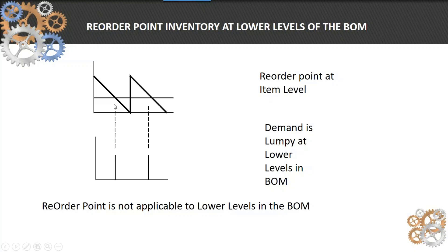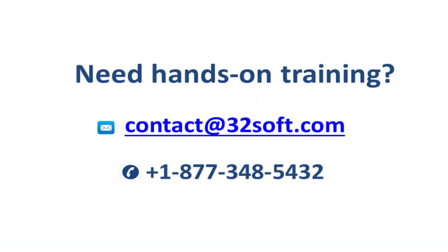However, for lower level items, the demand is lumpy. When you have a bill of material parent-component relationship, the only demand that occurs is when you launch an order for the parent. That makes the reorder point logic on a lower level item—a dependent demand item—not work very well. We tend not to use reorder point on BOMs; we only use reorder point at the top level.